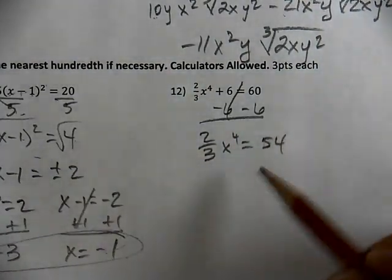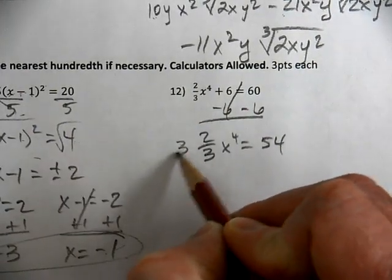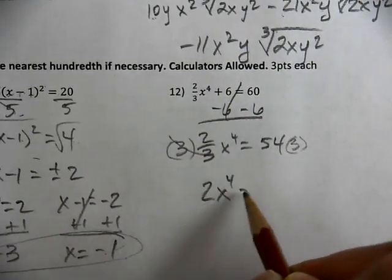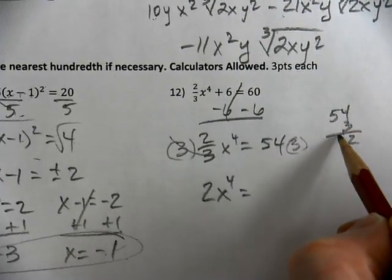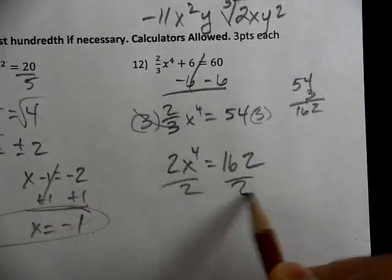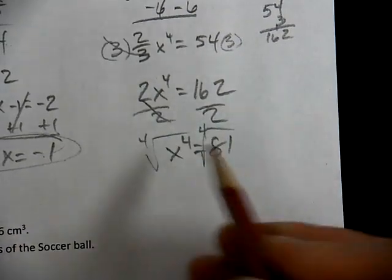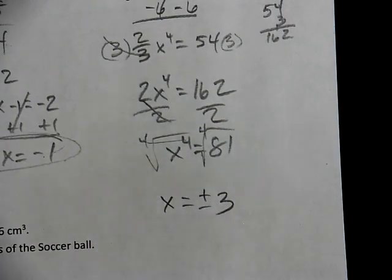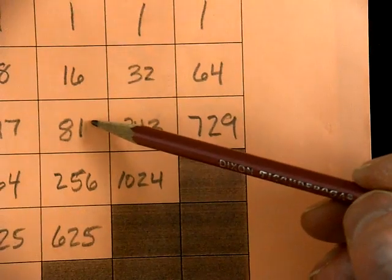I isolated my x to the fourth from my coefficients. I don't like to divide by a fraction. I'm going to multiply by 3 to get rid of my denominator. So that's 2x to the fourth. 54 times 3, 3 times 4 is 12, 3 times 5 is 15, plus one more is 16. So that's 162. Divide by 2, which is 81. When I take the fourth root, don't forget that that's even. That's why I get plus or minus 3. The fourth root of 81 is 3.